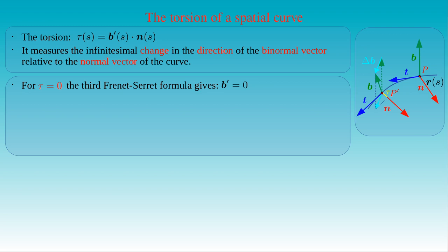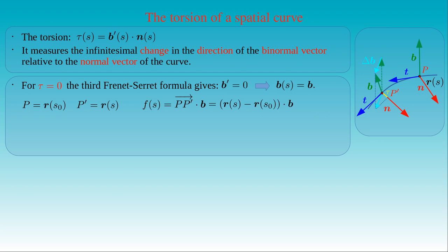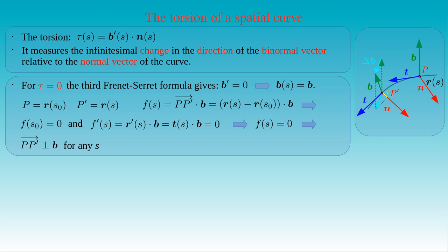As a result, if tau vanishes, the binormal B does not depend on the arc length but is constant along the curve. Denoting the arc length at P as s0 and at P' as s, we define the function F(s) as the dot product of the vector from P to P' and the binormal B. The vector PP' is simply the difference of position vectors r(s) minus r(s0). It follows that F(s0) vanishes, and the derivative of F equals r-prime times B, since r(s0)·B is constant. Substituting r-prime by the tangent T, which is perpendicular to B, the derivative of F vanishes. Thus F is constant, and since F(s0) = 0, F is identically zero. As a result, the vector PP' is perpendicular to B for any arc length parameter s, and our main conclusion is that the curve r(s) is a plane curve lying in the osculating plane.